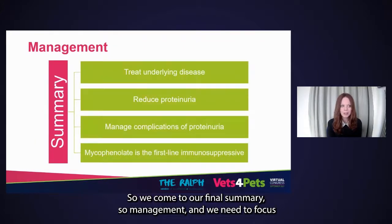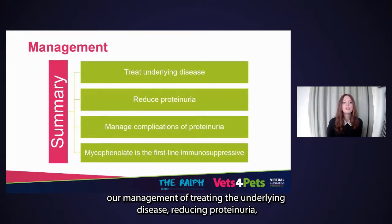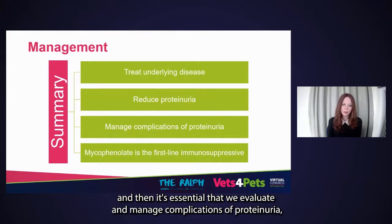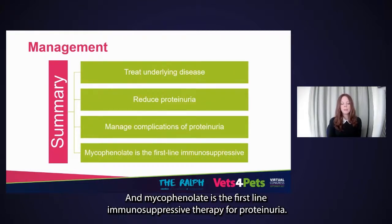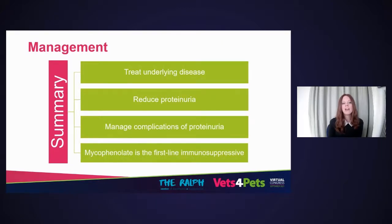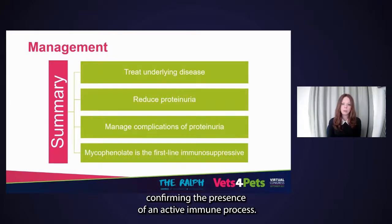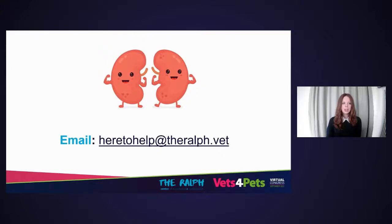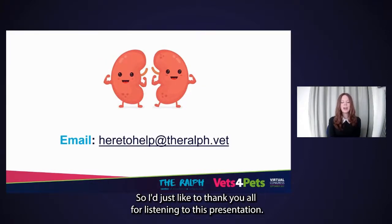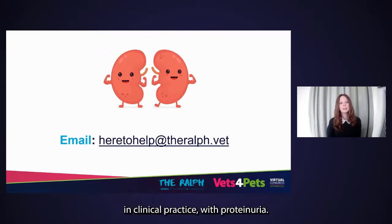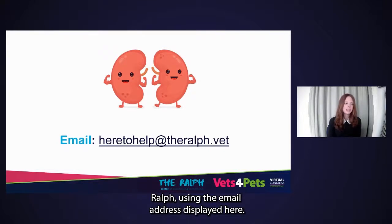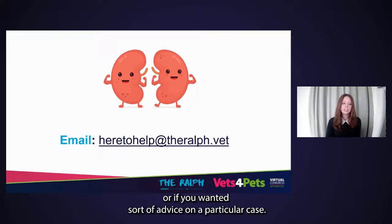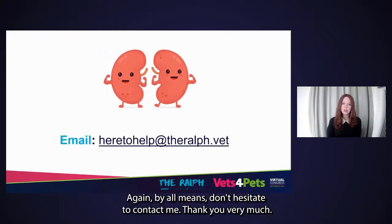In our final summary on management: we need to focus on treating the underlying disease, reducing proteinuria, and evaluating and managing complications such as hypertension and thromboembolic disease. Mycophenolate is the first-line immunosuppressive therapy for proteinuria; however, treatment is typically only recommended when renal biopsy results confirm the presence of an active immune process. Thank you all for listening to this presentation. I hope you feel more confident dealing with dogs with proteinuria in clinical practice. Please feel free to contact me at the Ralph using the email address here — heretohelp@theralph.vet — or if you'd like advice on a particular case, please don't hesitate to get in touch.